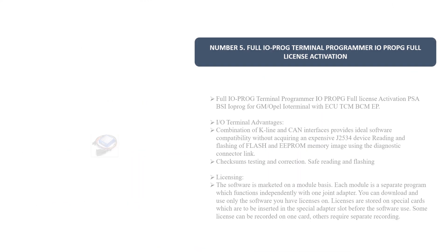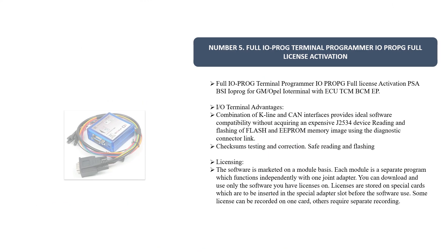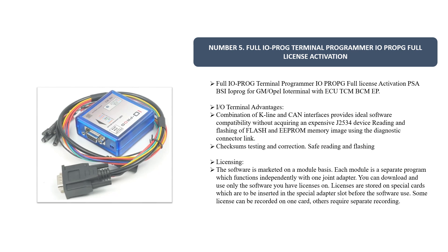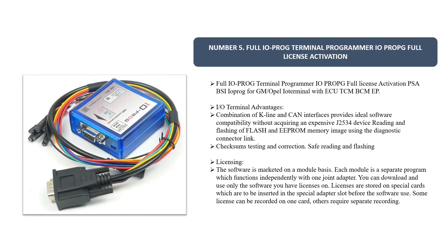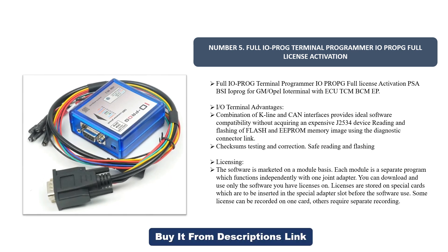Number five: Full IO Prog Terminal Programmer — IO Prop G full license activation. Full IO Prog Terminal Programmer, IO Prop G full license activation. PSA BSI IO Prog for GM Opel IO Terminal with ECU, TCM, BCM, and EPS.